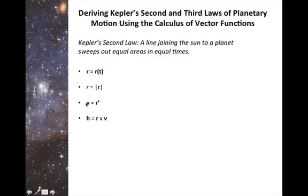v, our velocity vector, is equal to the derivative of r. h is the constant vector cross product used to represent the cross product of r and v. Finally, we can represent our position vector r in polar coordinate form, as seen here.